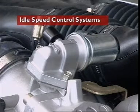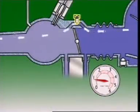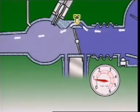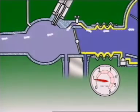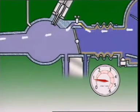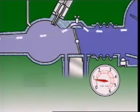This section examines idle speed control systems. Base engine idle speed may be set by adjusting a screw on the throttle body. This sets how much air flows through a bypass passage from the intake air side to the manifold side of the throttle body.